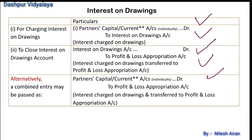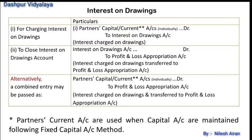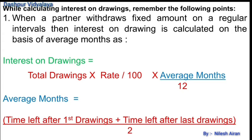Partners' current accounts are used when capitals are maintained under the fixed capital method. When a partner withdraws a fixed amount at regular intervals, interest on drawings is calculated on the basis of average months. Interest on drawings is calculated as: total drawings multiplied by rate divided by 100, multiplied by average months divided by 12.